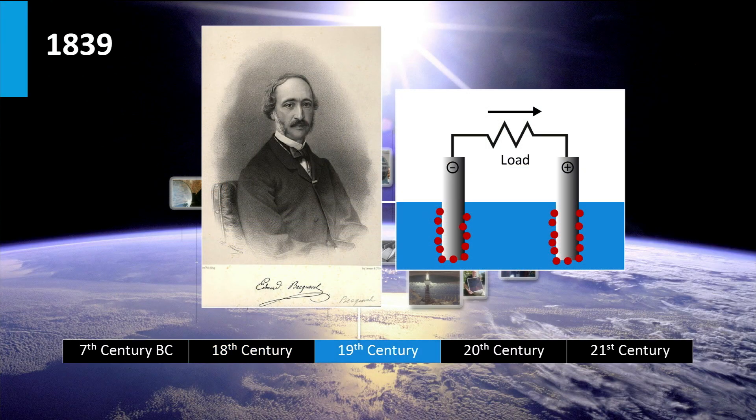In 1839, the scientist Edmund Becquerel, at an age of 19 years, discovered the photovoltaic effect. The photovoltaic effect is the generation of voltage or current in a material when exposed to light. He observed this effect in an electrolytic cell. The cell was made out of two platinum electrodes placed in an electrolyte.